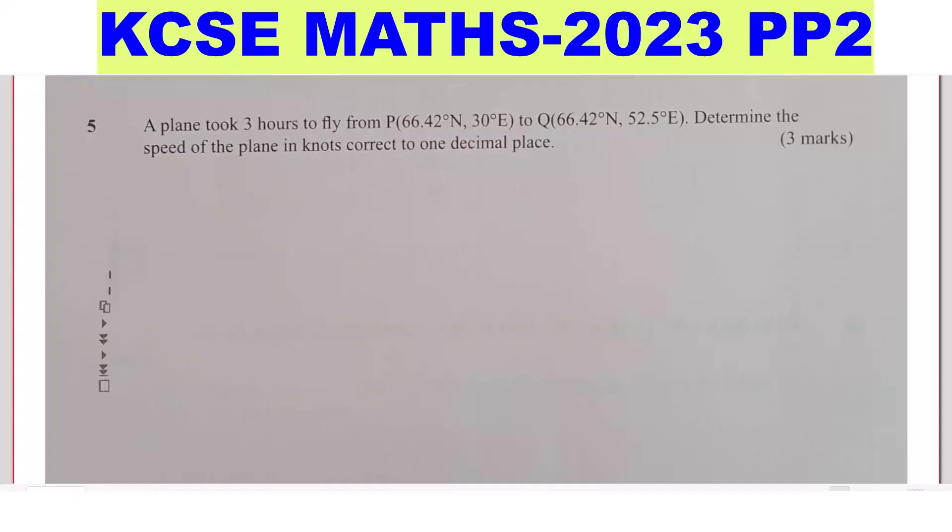Question 5. A plane took 3 hours to fly from point B, 66.42 degrees north, 30 degrees east, to point Q, 66.42 degrees north, 52.5 degrees east. Determine the speed of the plane in knots correct to one decimal place.